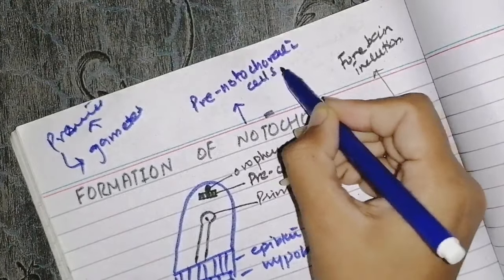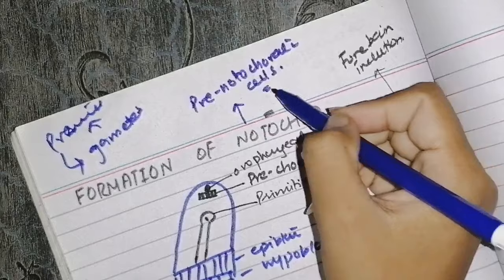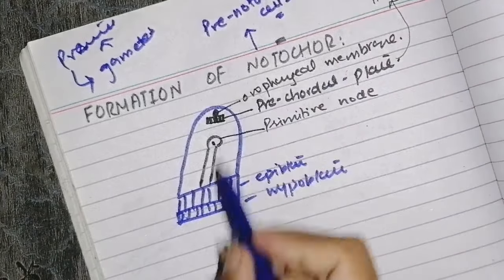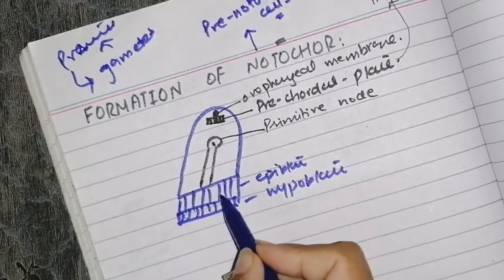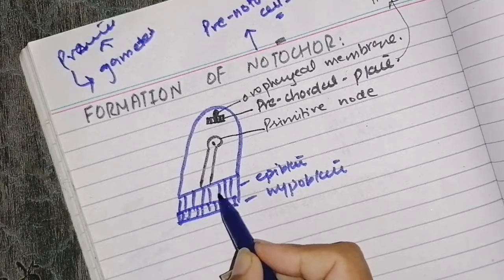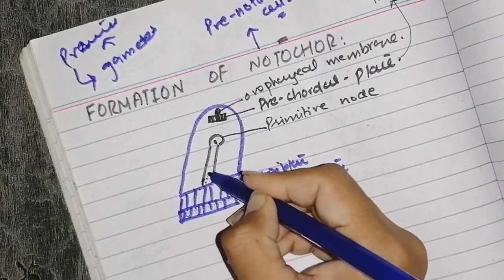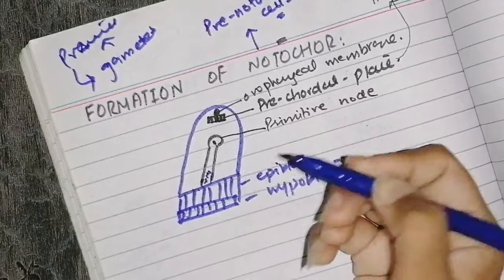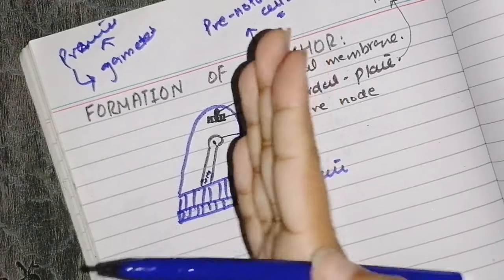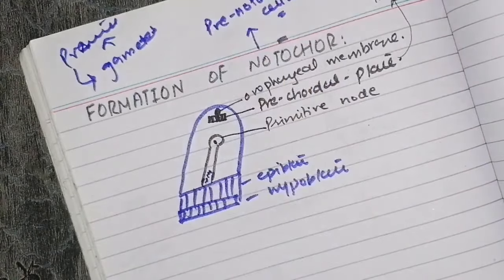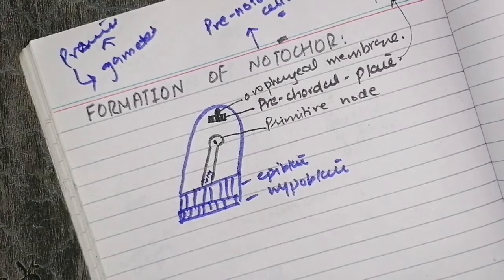Now we have to study the notochord. There are some precursor cells in the body — we call them pre-notochordal cells. These pre-notochordal cells move through different routes. Pre-notochordal cells appear in the epiblast, and they move through the primitive streak laterally and then cranially.